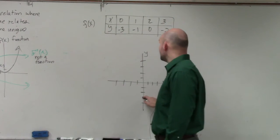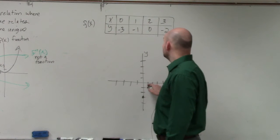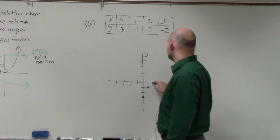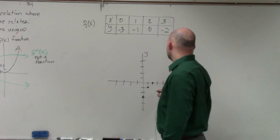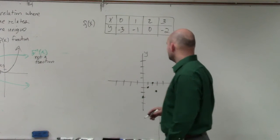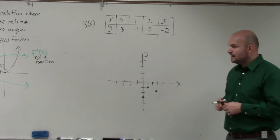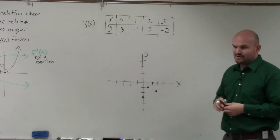So you have 0, negative 3. You have 1, negative 1. You have 2, 0. And you have 3, negative 2. 1, 2, 3, negative 2. So that's what that graph looks like.